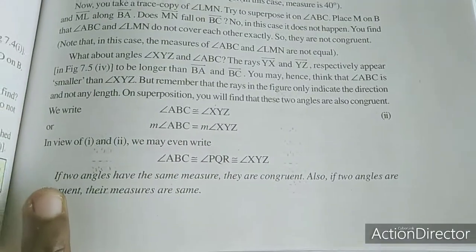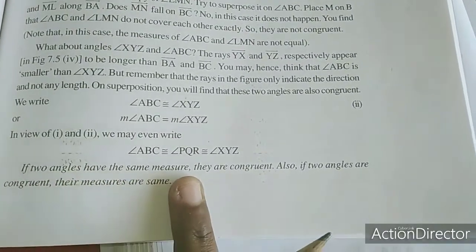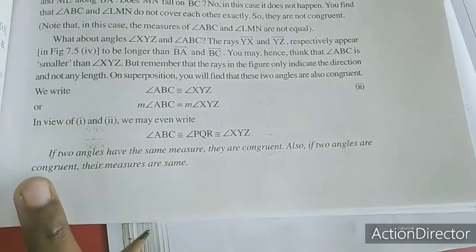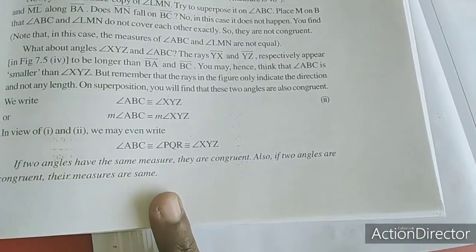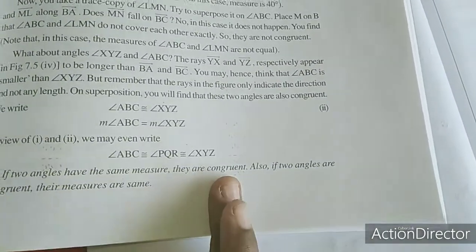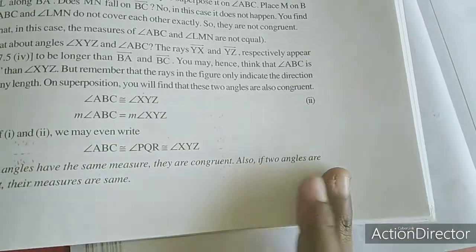So if two angles have the same measure, they are congruent. Also if two angles are congruent, their measures are same. Angle one equals angle two means congruent angles are equal.